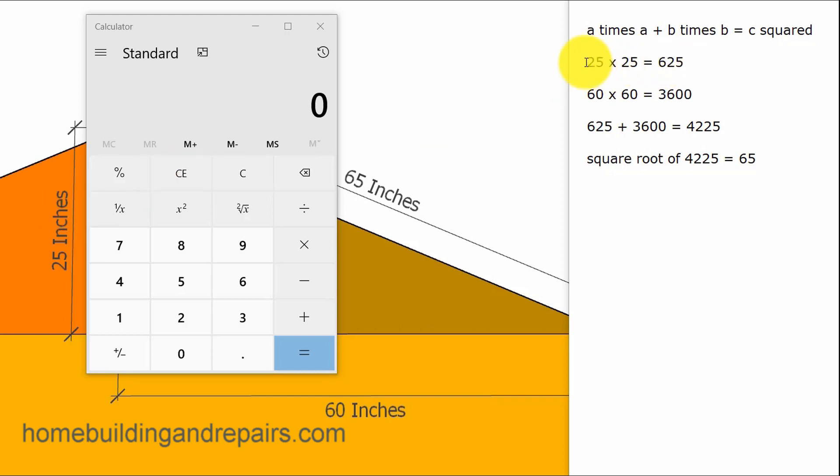The square of 60 is 3600, just multiplying the numbers together. Then we add these two numbers together right here. That gives us 4,225. Then we push the square root button on the calculator. That gives us 65 from the 4,225.